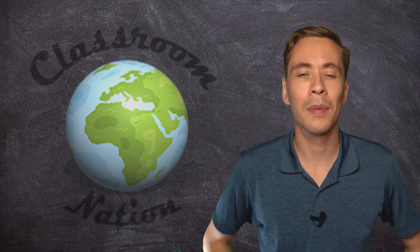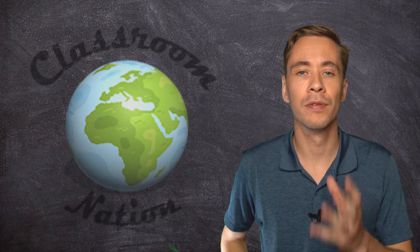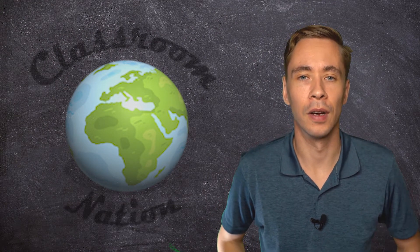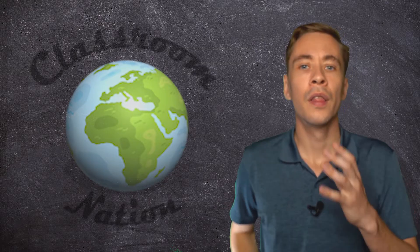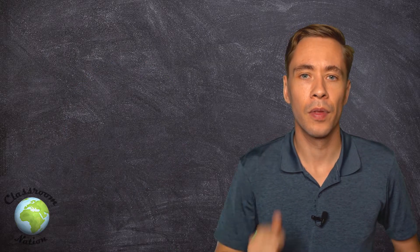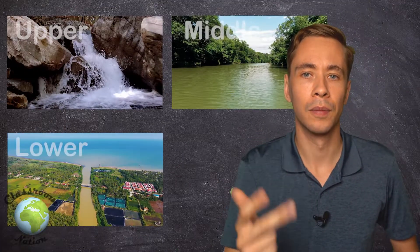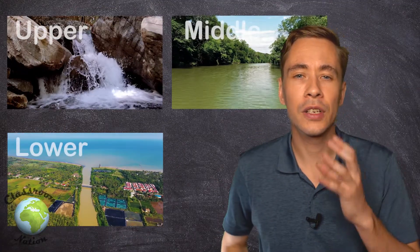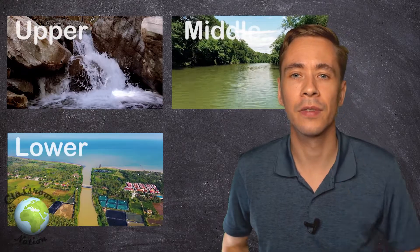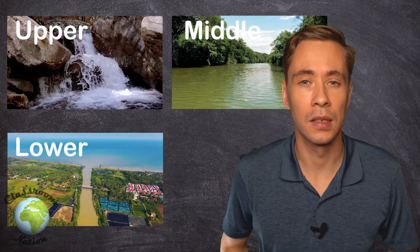Hello and welcome. I'm Andy and today we're going to take a look at river valley profiles. There are three sections of a river: the upper, the middle, and the lower. Each section has very different characteristics and processes.